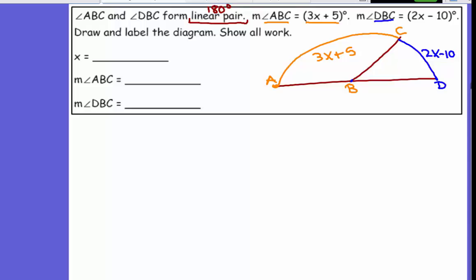So linear pair, what the theorem says is you add angle 1 plus angle 2, that gives you 180 degrees. So you add this angle, that's 3X plus 5, plus this angle, that's plus 2X minus 10. Then those are going to give you 180 degrees. Then you are going to solve for it.